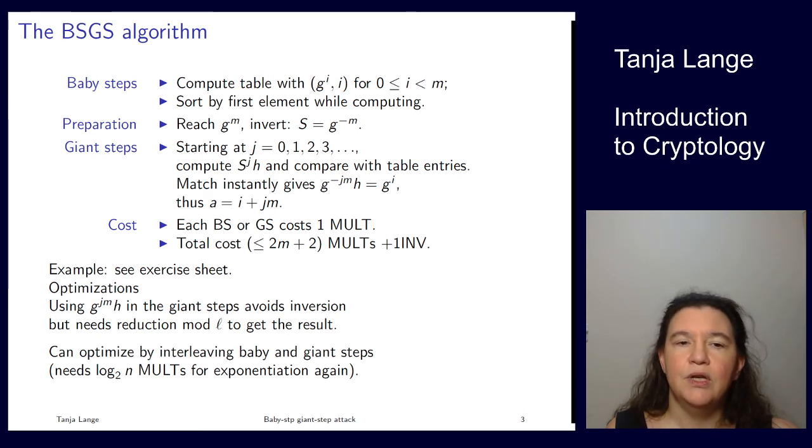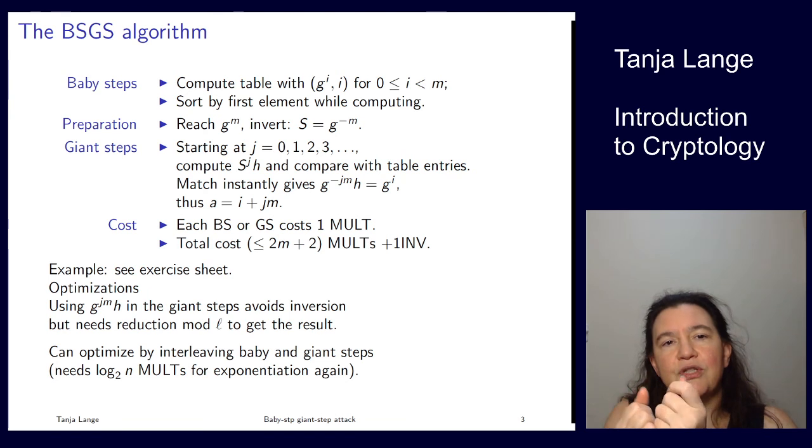You could optimize this some more. You could, for instance, avoid the inversion by taking positive exponents in the giant steps. And then the a is not i plus j m, but a is i minus j m. So then you need to compute modulo r. Not a big deal, but it gets often forgotten, so this is a bit easier to remember. You could optimize for the success probability by going kind of one step at a time in both directions. So you're doing some baby steps and some giant steps. That requires to do s with one big exponentiation, but there you can use square and multiply. And then you slowly walk in both directions, more giant steps, more baby steps, and look for matches.